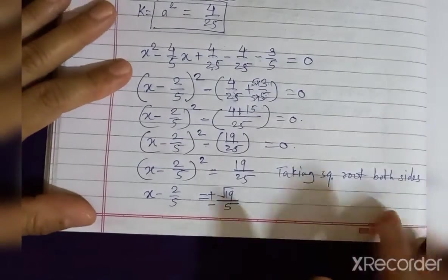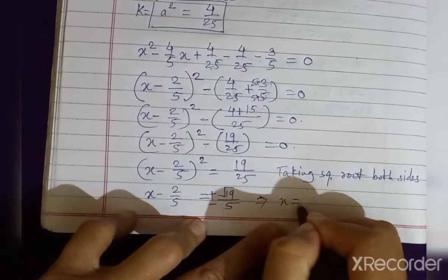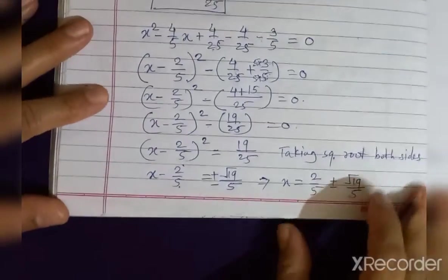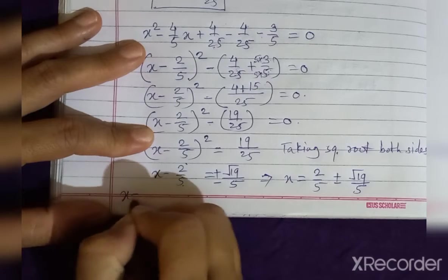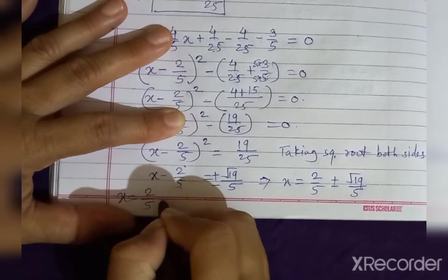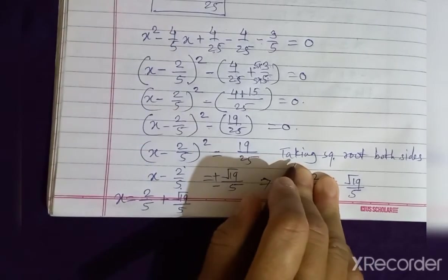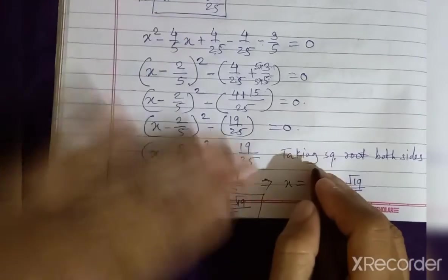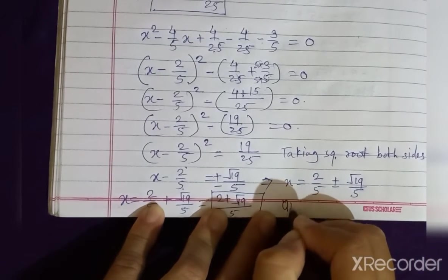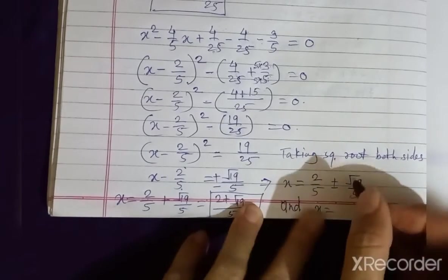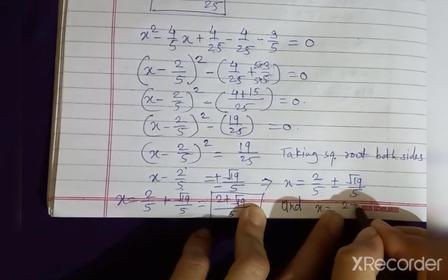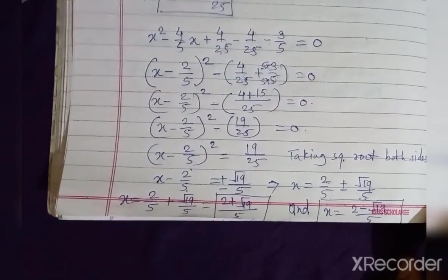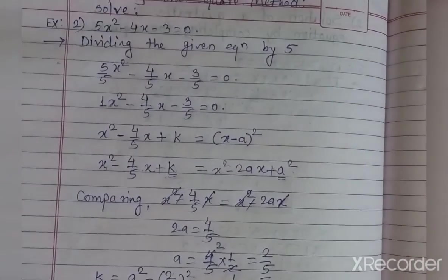Therefore x is equal to 2/5 plus or minus √19/5. The two roots are: x = (2 + √19)/5 and x = (2 minus √19)/5, since the denominators are the same. In this way we can find the roots of the given quadratic equation by the completing square method.